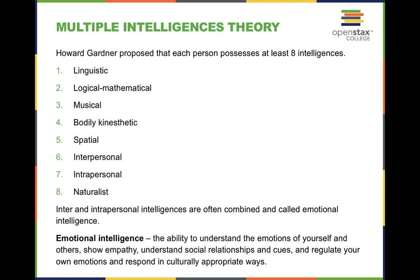Howard Gardner proposed that we each have at least eight intelligences, with varying levels of each. The first is linguistic intelligence — your ability to use language, articulation in writing and speech. Second is logical/mathematical intelligence, where some people are mathematically inclined and able to see complex relationships within an academic setting and navigate mathematical equations.